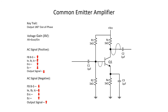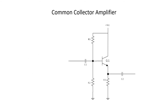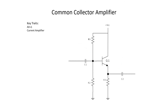Now let's move on to the common collector amplifier. It has an input on the base and an output on the emitter — the terminal we didn't talk about is the collector. A key trait of the common collector amplifier is that it has an AV of one, so if asked to calculate AV on a common collector, the answer is simply one. It is a current amplifier, so we won't see much voltage amplification, but we will see current amplification.